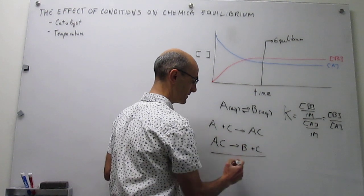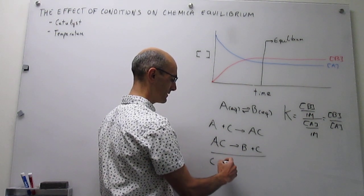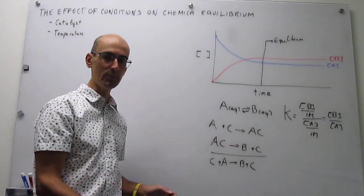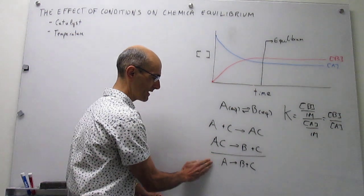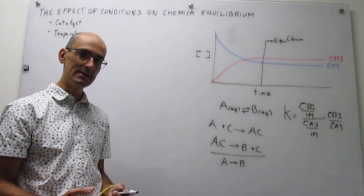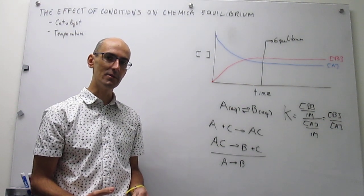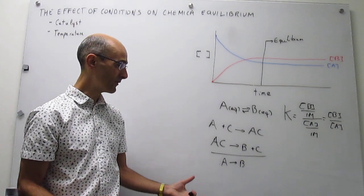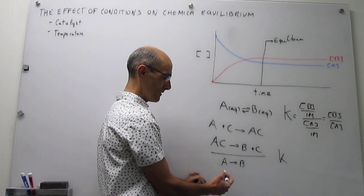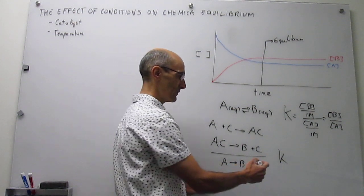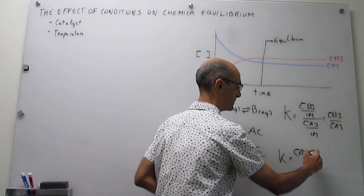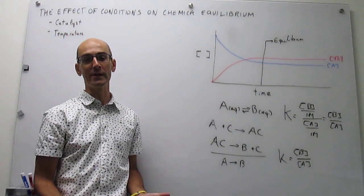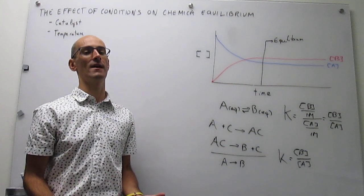The overall reaction would be C plus A to generate B plus C — the catalyst is not part of the overall reaction. The overall reaction is still A to give B, and that is the definition of a catalyst: a substance that makes a reaction go faster without itself being consumed or generated. Notice that when you write the equilibrium constant for that process, the catalyst does not appear as part of the overall process. So the equilibrium constant is going to be exactly the same — still concentration of B over concentration of A — because the catalyst is not part of the overall reaction. A catalyst will not affect the equilibrium constant.